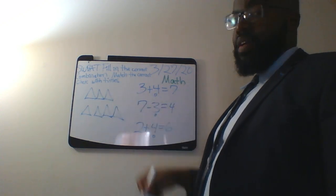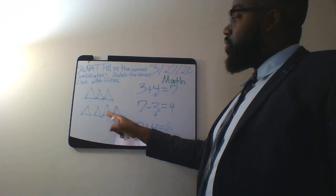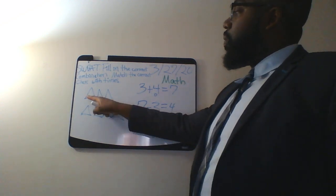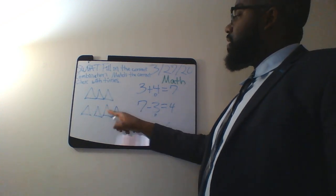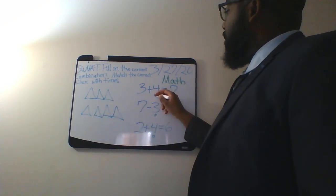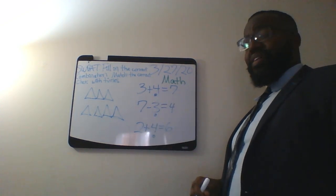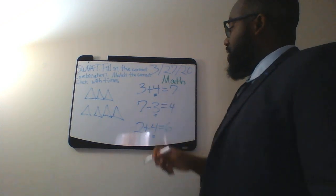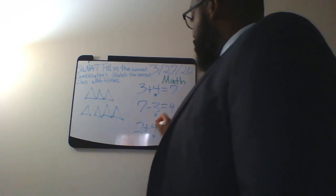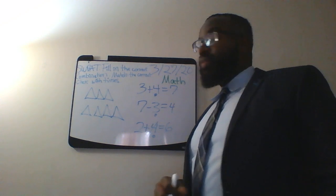3, 1, 2, 3, plus 1, 2, 3, 4 equals 1, 2, 3, 4, 5, 6, 7. It seems correct. If we look here, it's 7 minus 3. That's not right. And this one is 2 plus 4. That's not right either. So the first one is which you bubble in.